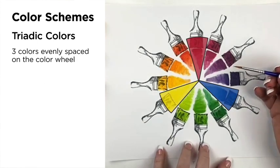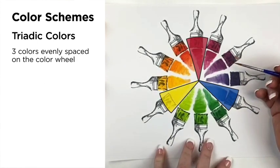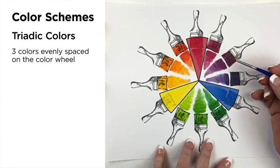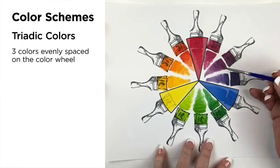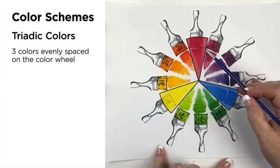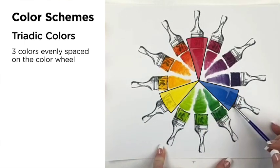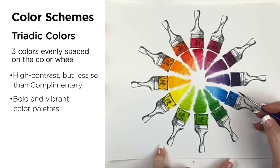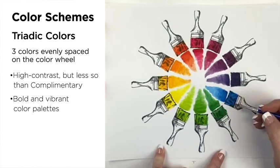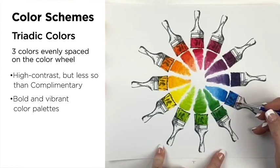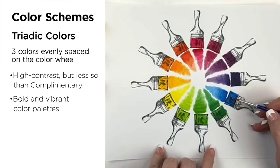A triadic color scheme uses three colors that are evenly spaced on the color wheel: the primary red, the primary yellow, and the primary blue. This provides a high contrast color scheme, but less so than the complementary color scheme, making it far more versatile. This combination creates bold and vibrant color palettes.